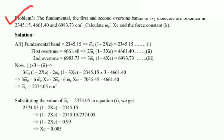Let us solve a problem. The fundamental, first, and second overtone bands of the nitrogen molecule are obtained at 2345.15, 4661.40, and 6983.73 cm⁻¹. Calculate omega_e_bar, xe, and the force constant k. The fundamental band gives: omega_e_bar × (1 − 2xe) = 2345.15 cm⁻¹ (eq. 1). The first overtone gives: 2 × omega_e_bar × (1 − 3xe) = 4661.40 cm⁻¹ (eq. 2). The second overtone gives: 3 × omega_e_bar × (1 − 4xe) = 6983.73 cm⁻¹ (eq. 3).